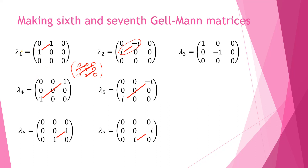So what have we done so far? We have taken Pauli matrix sigma 1 to form lambda 1, then lambda 4, then lambda 6. Then we have taken the second Pauli matrix sigma 2 and extended those elements to produce lambda 5 and lambda 7. Now we come to the interesting part of how to make lambda 8. In order to form lambda 8, I need to say something about the rank of the SU(N) group in general.